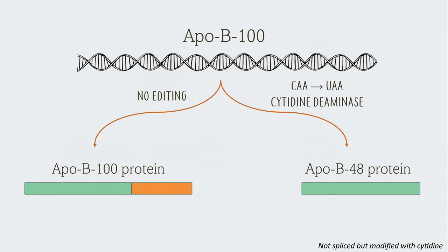ApoB100 has a special gene, not spliced but modified with cytidine. The deaminases can add stop codons where it lies, and proteins made are only part of what was transcribed.